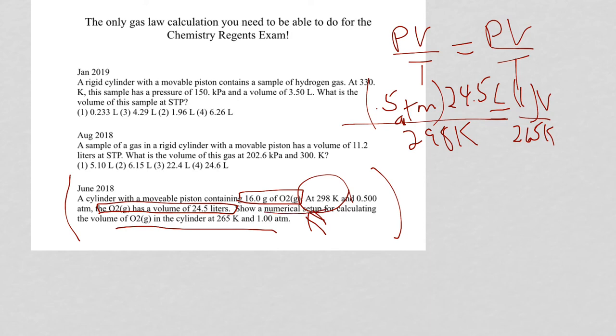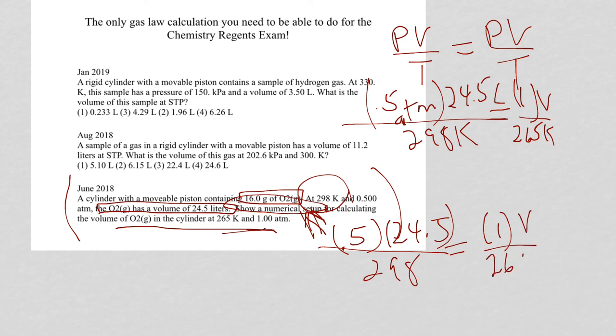When you're asked to show a numerical setup, it did not say anything about units. Putting 0.5 times 24.5 over 298 equals 1 times V over 265. That's your numerical setup. You don't need the units when it says numerical setup. Even though they told us it was oxygen and gave us the mass, we didn't need it here.